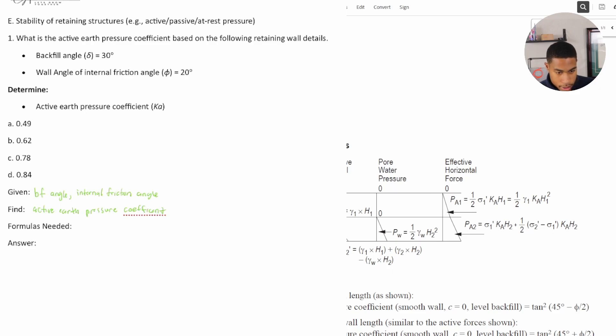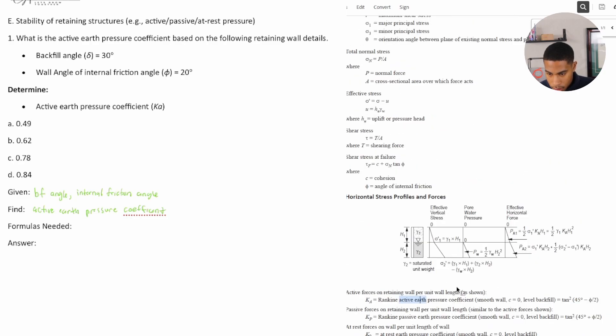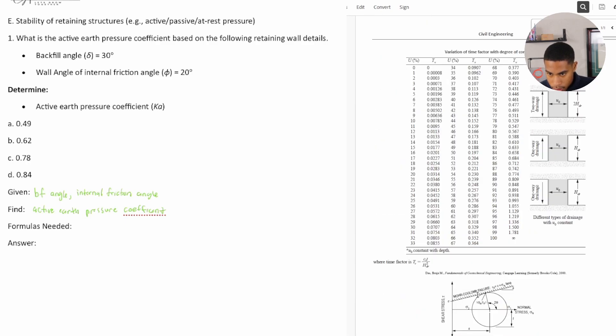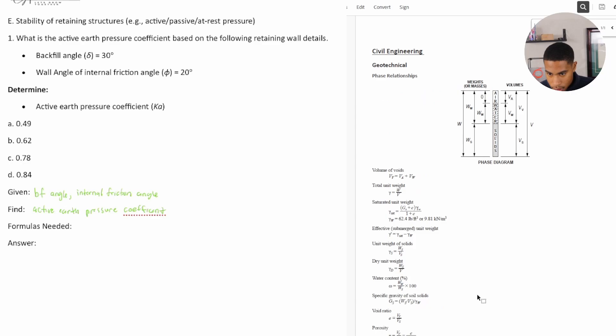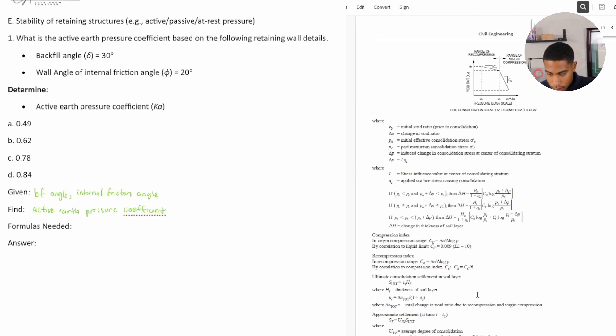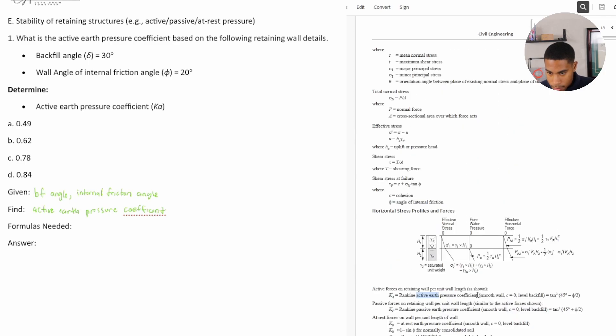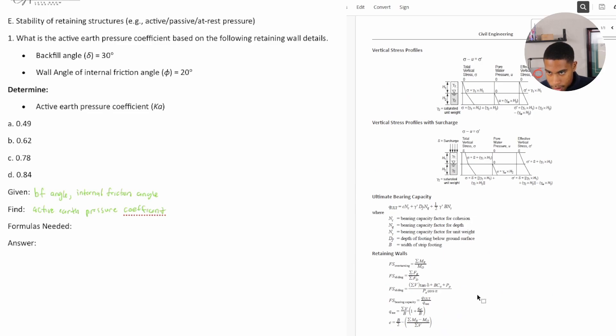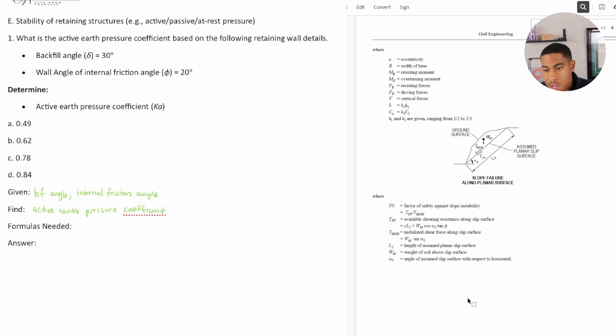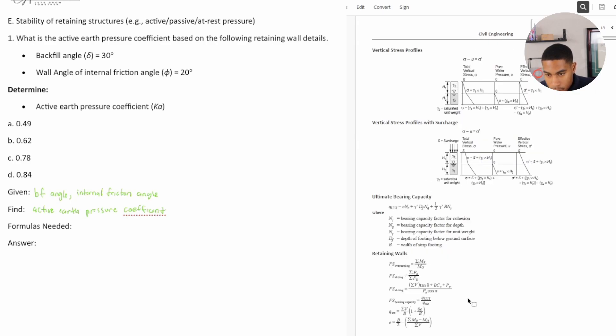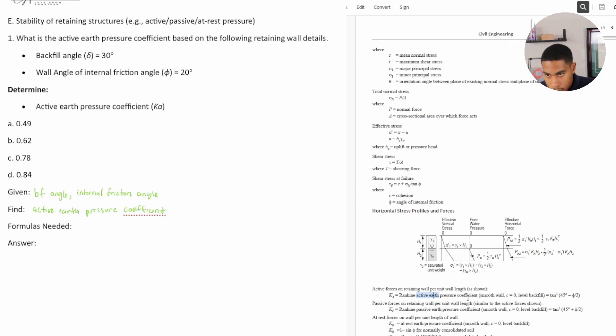Okay, so here at the bottom, we have Ka—it says it's the Rankin active earth pressure coefficient, and it is equal to tan squared, and in parentheses it's 45 minus φ divided by 2. Well, what is that symbol, φ? Just looking through the geotech section to see if I can find what φ is.